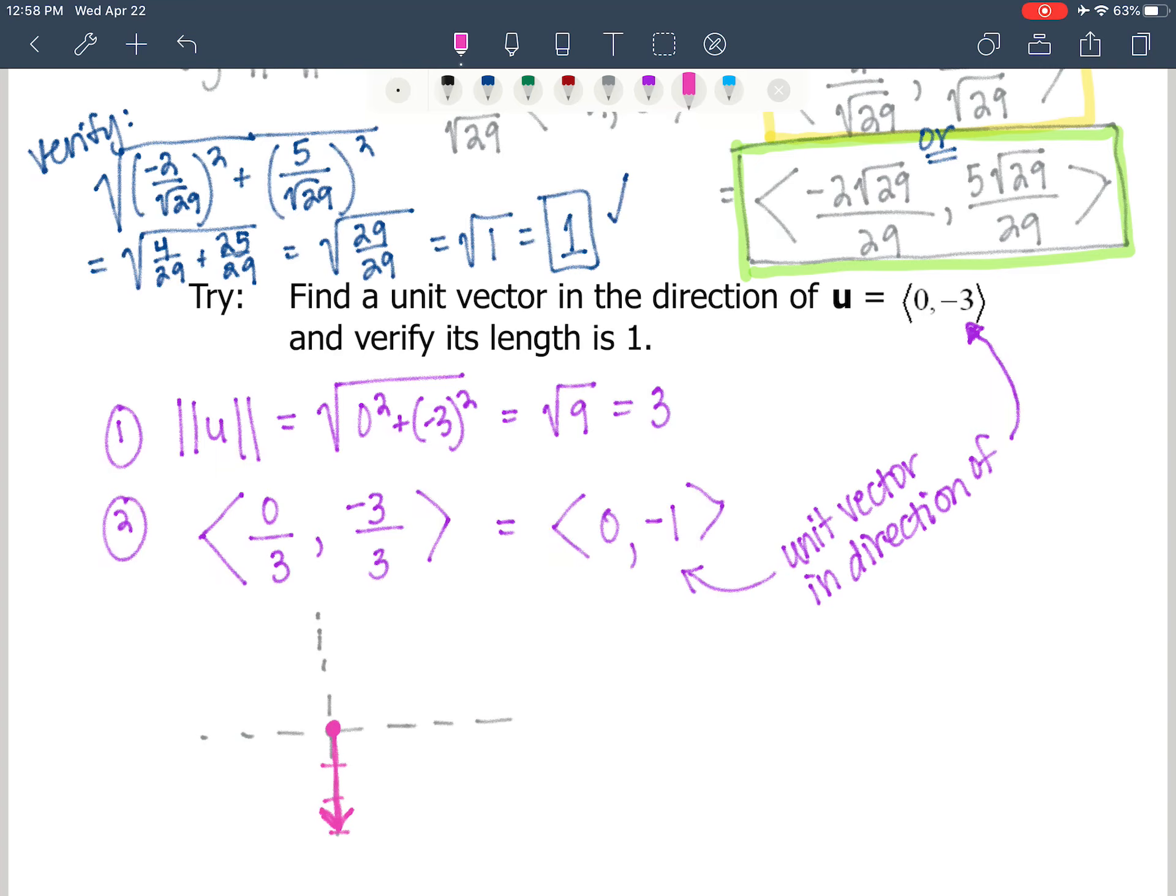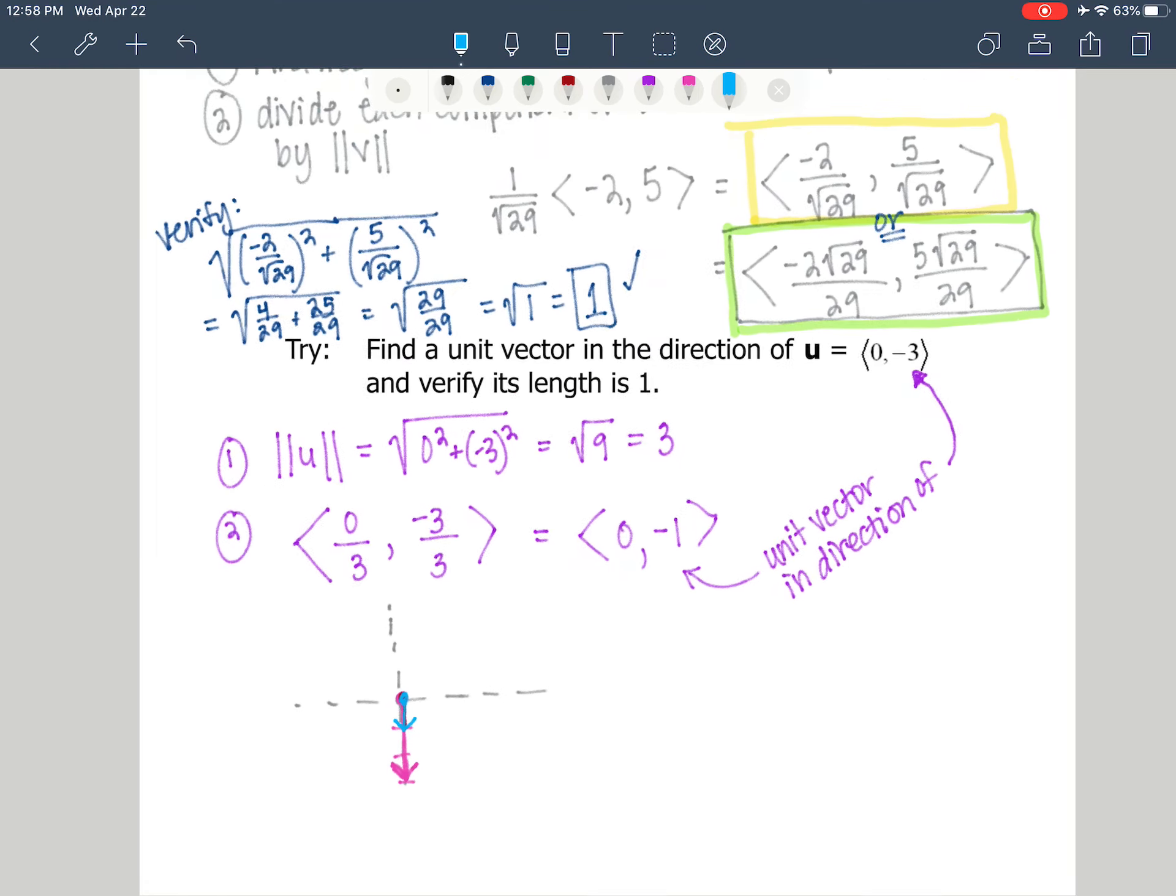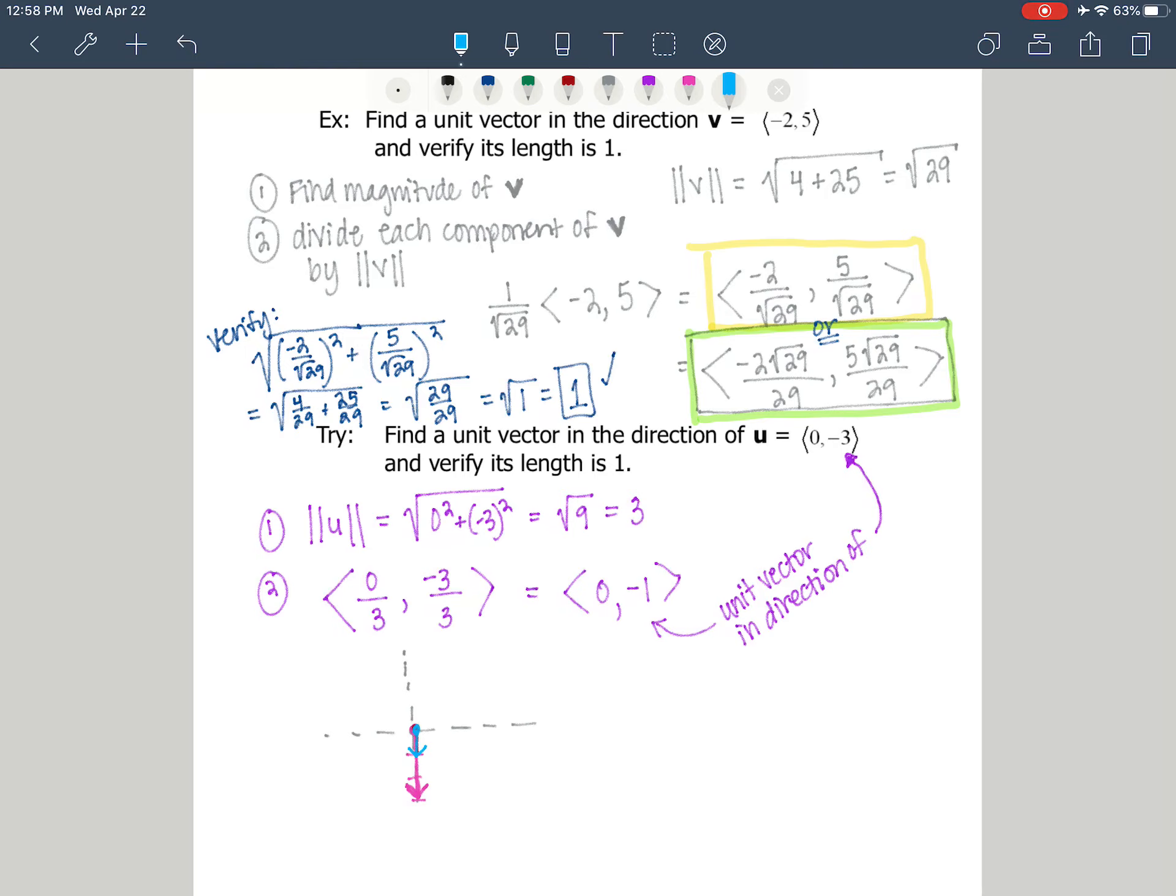Now 0, negative 1 is this vector right here. Let me do this in blue. It's this vector right here. Notice how 0, negative 1, it has the same direction as vector u, this unit vector, but it only has a length of 1, which is a pretty cool thing. So it's very useful later on in our work with vectors.